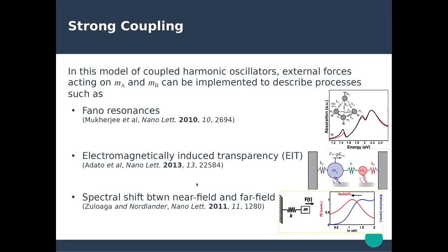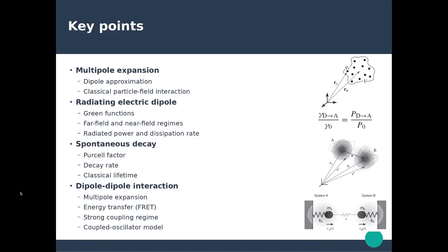To summarize this chapter: we introduced the concept of multipole expansion and dipole approximation to describe classical field-particle interaction. We discussed the radiating electric dipole and introduced the Poynting theorem as a means to calculate the radiated power and dissipated rate of molecules. We introduced spontaneous decay with the Purcell factor to calculate the decay rate in molecules. Finally, we discussed the dipole-dipole interaction framework based on multipole expansion, focused on the special case of FRET energy transfer, and discussed the strong coupling regime in the framework of coupled harmonic oscillators.